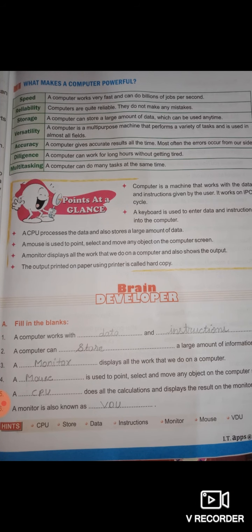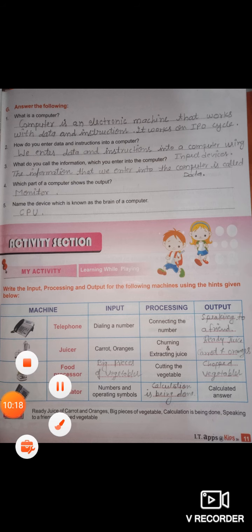Now you will revise the 'at a glance' part, and always revise the exercise and question-answer part of the chapter. Revise true and false, one-word answers; you can skip application-based questions and MCQs, the full forms, the question-answer part, and the activity section. Revise the chapter well because in the next class I will take your test. That's all for today — take care of yourselves, bye!